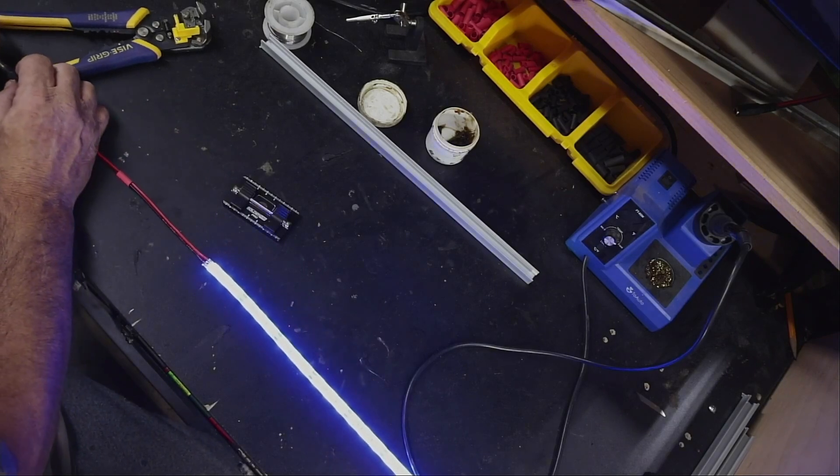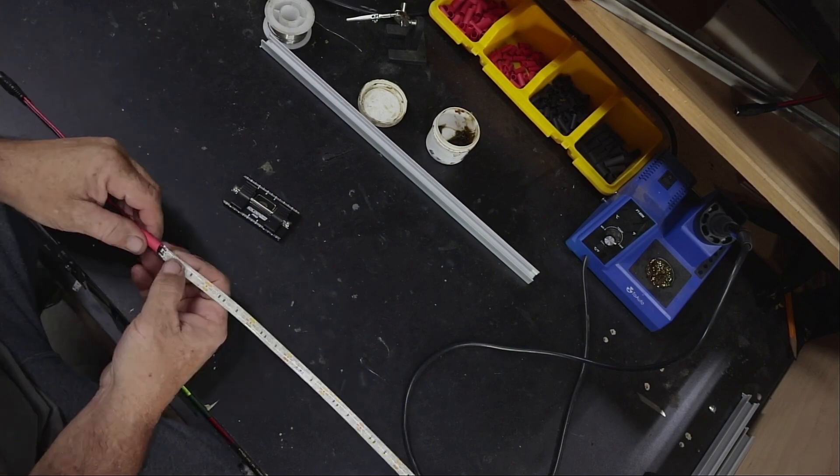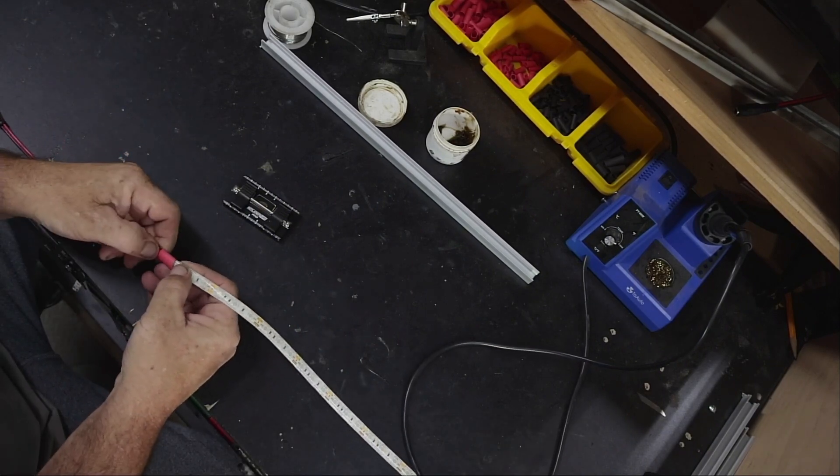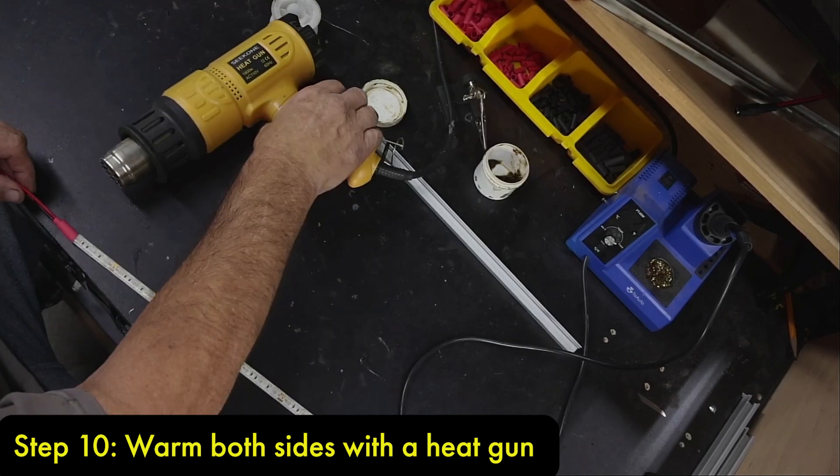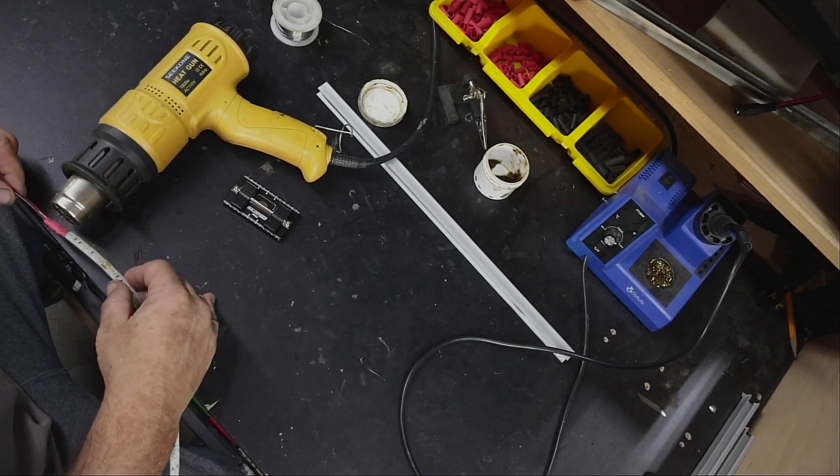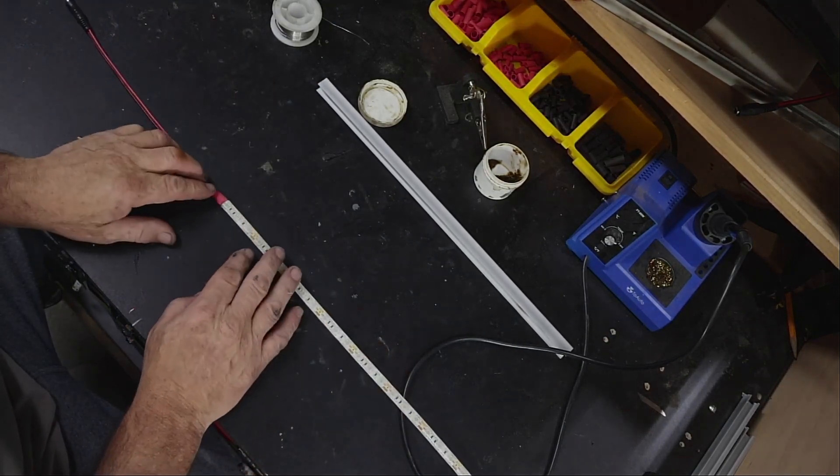Next, run your shrink tube over the top of the connector. Grab your heat gun. And there you have the perfect soldered connection for an LED.